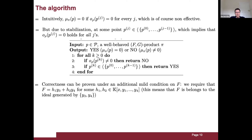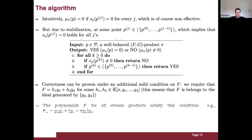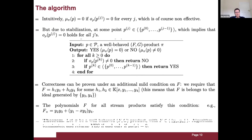To prove correctness — our second main result — we need an additional mild condition: F must belong to the ideal generated by the variables y3 and y4. All stream products considered in our paper satisfy this condition. We can then prove the theorem that for a well-behaved FG product with F belonging to the ideal generated by y3 and y4, the algorithm terminates and returns yes if and only if mu_pi of p equals zero.